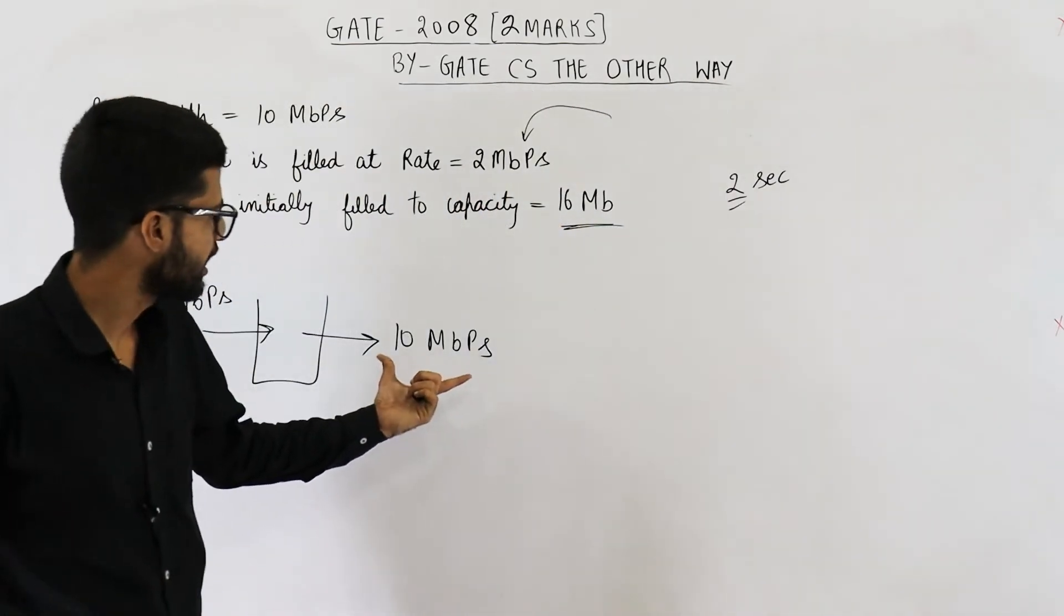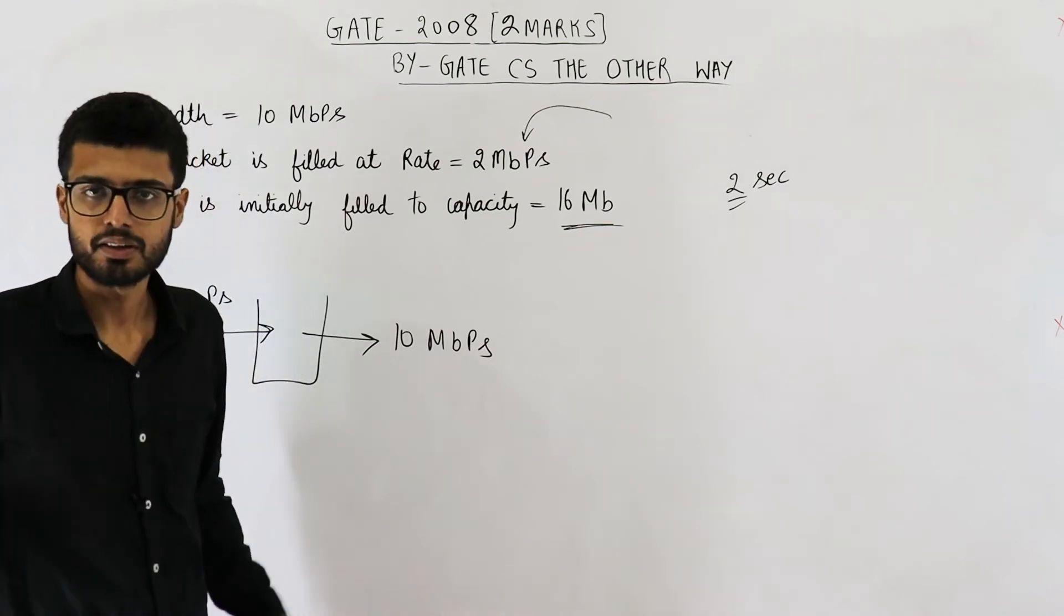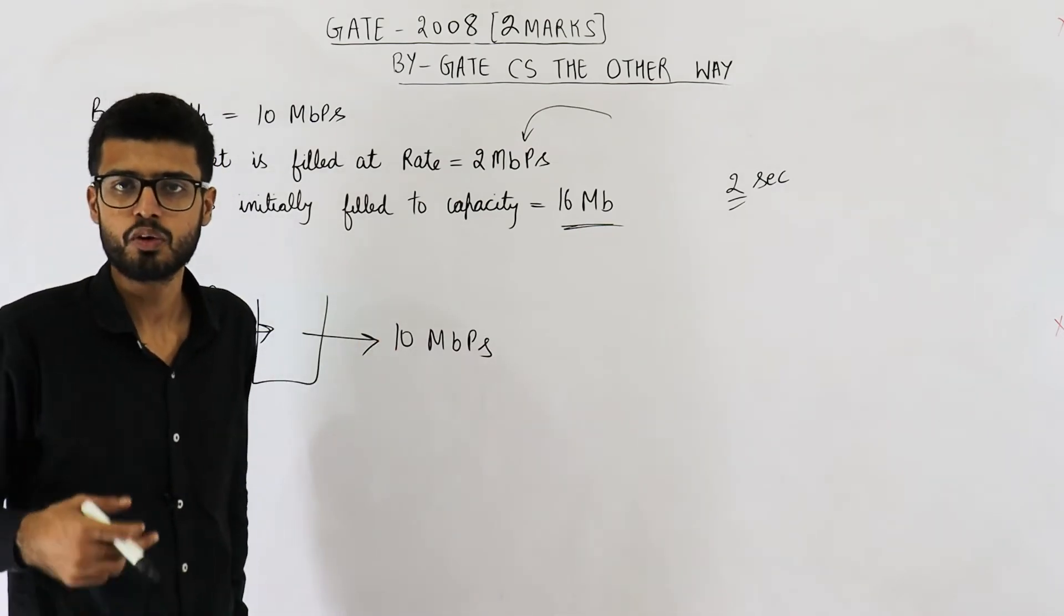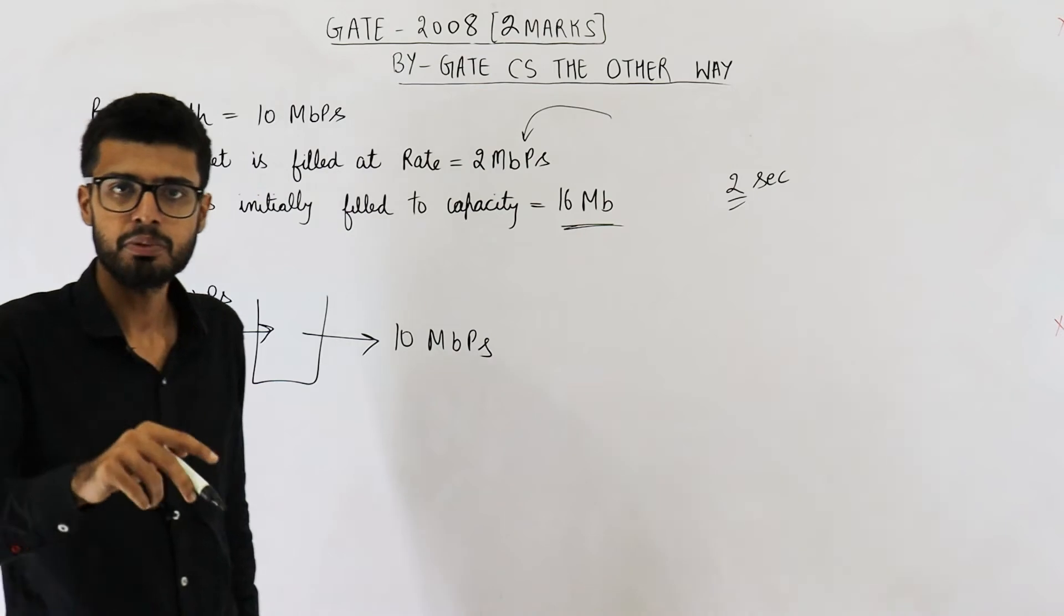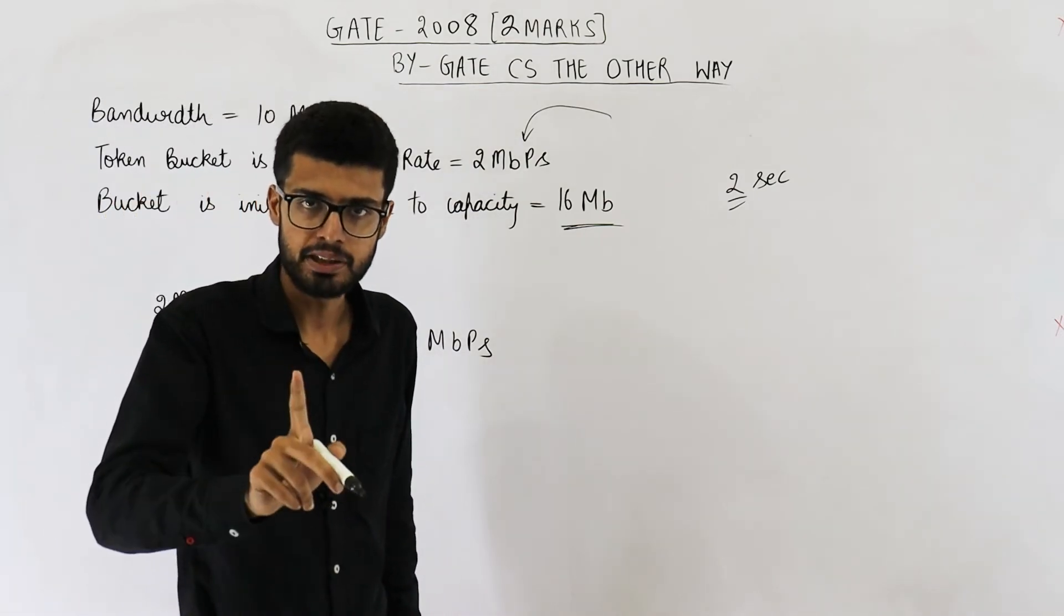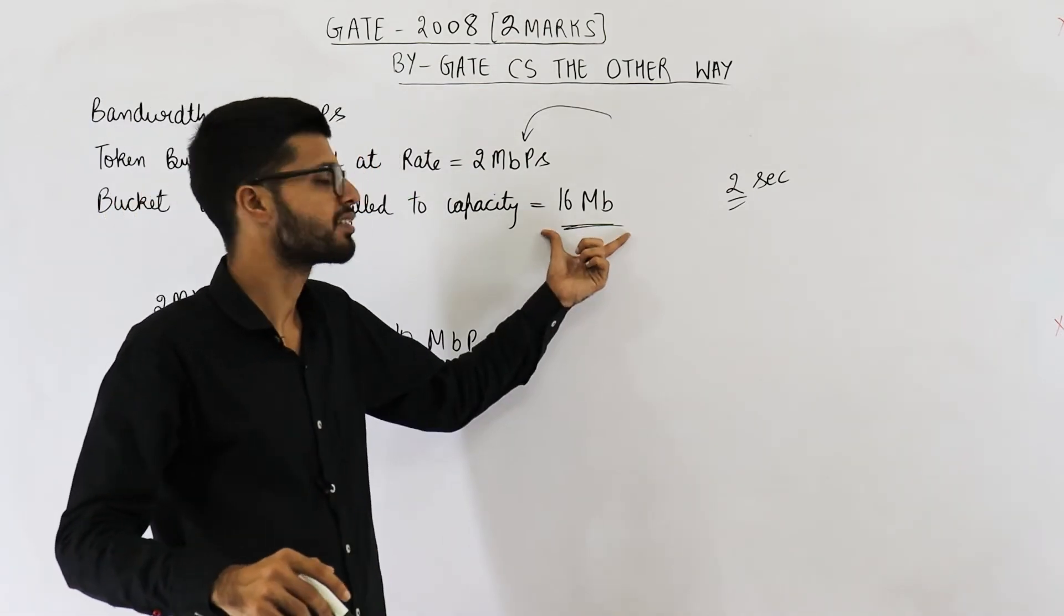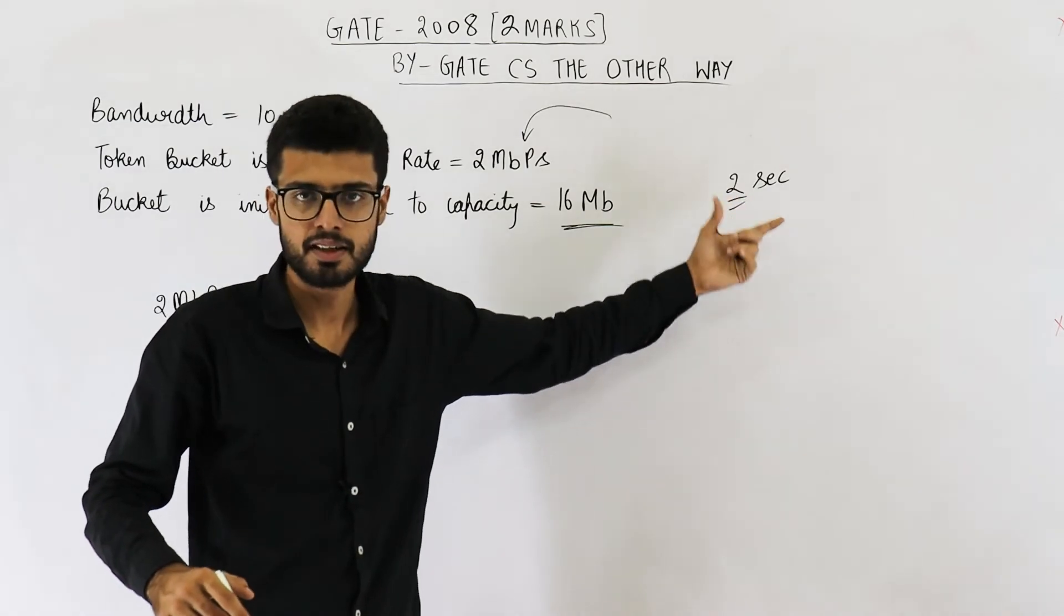So see, we found out that it is 10 minus 2, which is 8. We are taking out tokens at a rate of 8 Mbps. 8 Mbps means 8 MB in one second, so 16 MB is in 2 seconds. Hence, the answer is 2.